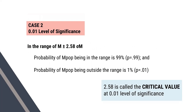Consider the 0.01 level of significance. In this range, mean plus or minus 2.58 sigma-m, where sigma-m is the standard error of mean, the probability of the population mean being in the range is 99%, and the probability of the population mean being outside this range is 1%. The value 2.58 is called the critical value at the 0.01 level of significance.